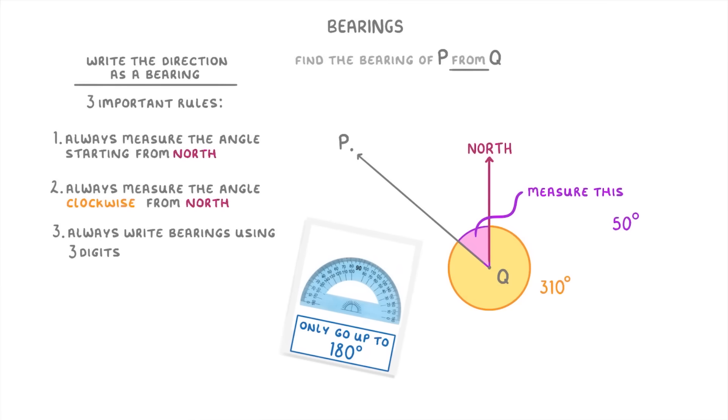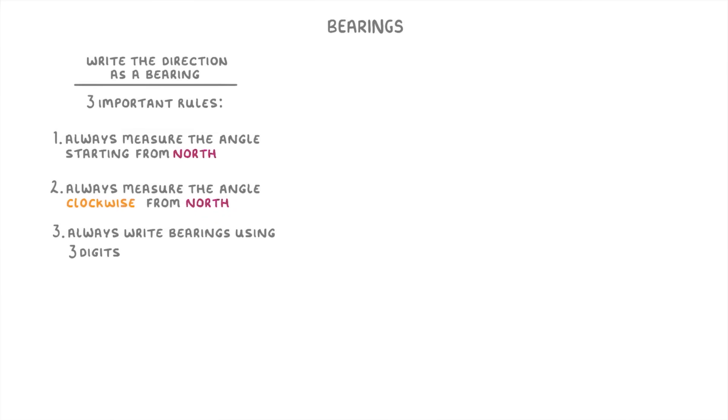And then use that to work out our bearing, which we could do by doing 360 minus 50, because remember there are 360 degrees in a complete circle, and that would give us the 310 degrees of our bearing.